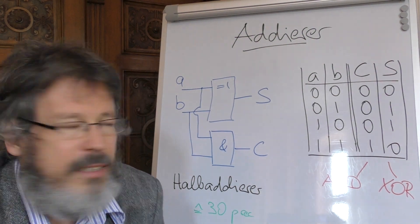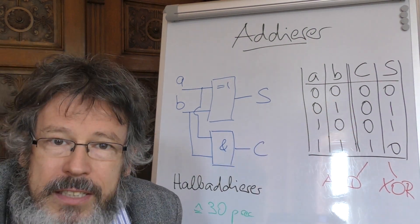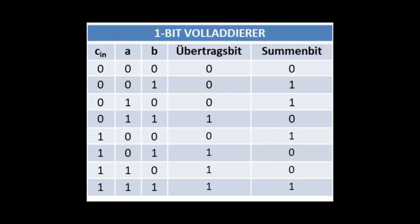Und ein Volladdierer hat entsprechend dieser Tabelle beim Halbaddierer folgende Addiertabelle. Die hat also jetzt drei Spalten auf der Input-Seite, weil wir haben neben A und B natürlich jetzt auch noch ein Übertrags-Bit, das möglicherweise dazukommen kann. Wir nennen das Carry-In. Das Ergebnis ist aber immer noch nur zwei Bits lang, denn im schlimmsten Fall, ich sehe das in der letzten Zeile, wenn A und B und das Carry-In-Bit alle drei eins sind, eins plus eins plus eins ist drei, drei können wir immer noch mit zwei Bit im Binärsystem darstellen. Deswegen genügt es uns für das Ergebnis, ein Carry-Out-Bit zu haben und ein Summen-Bit.